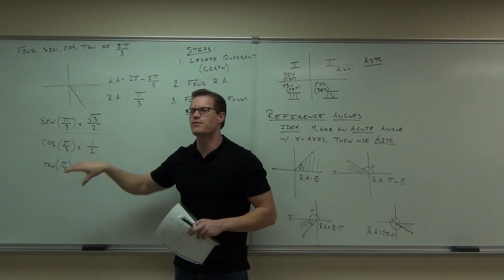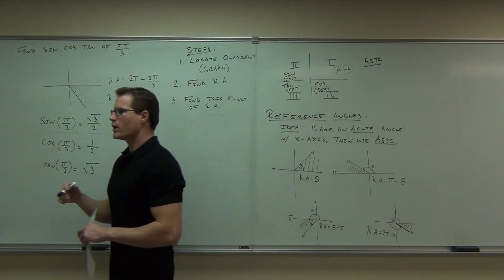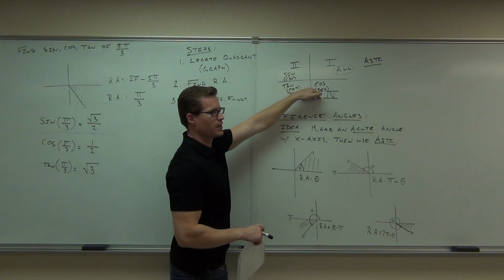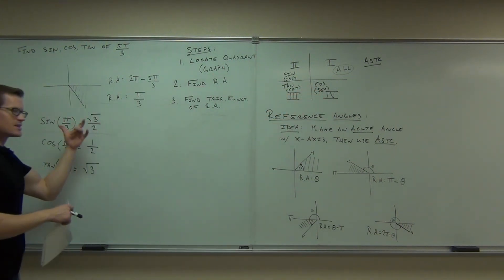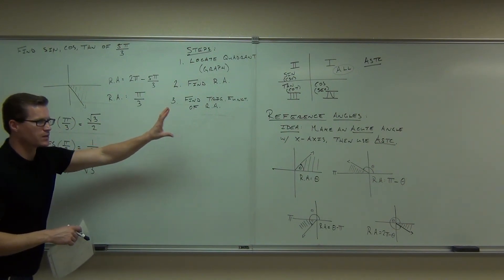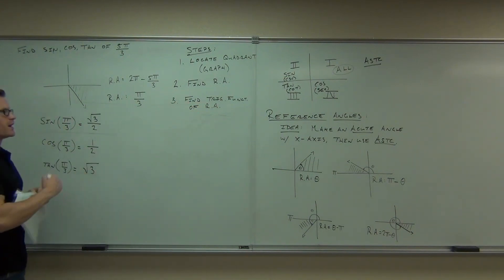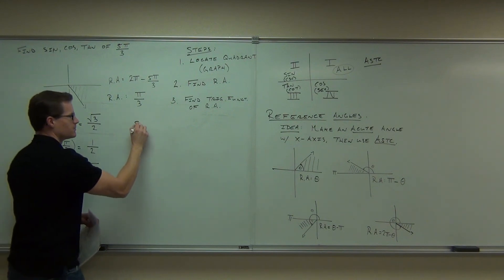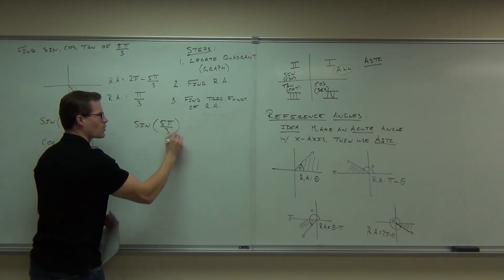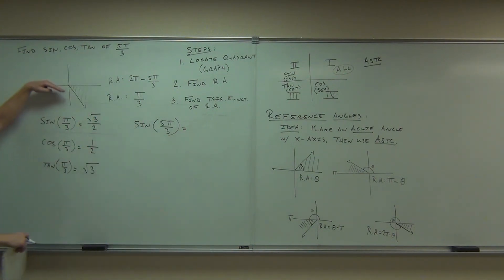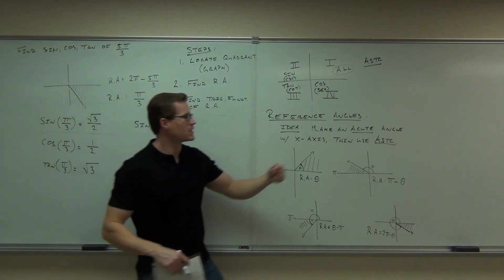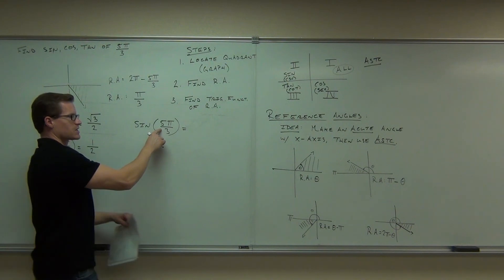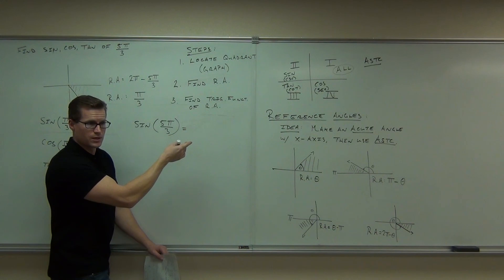Here's how the reference angle idea works with ASTC. If you know what quadrant your angle is in, you know what's positive: everything's positive in Q1, sine's positive in Q2, tangent's positive in Q3, cosine's positive in Q4, and everything else is negative. Once you have the reference angle, interpret what quadrant you're in, use the appropriate ASTC sign, and you can find sine, cosine, and tangent of 5 pi over 3. Since sine of pi over 3 is root 3 over 2, and sine is negative in the fourth quadrant, sine of 5 pi over 3 is negative root 3 over 2.